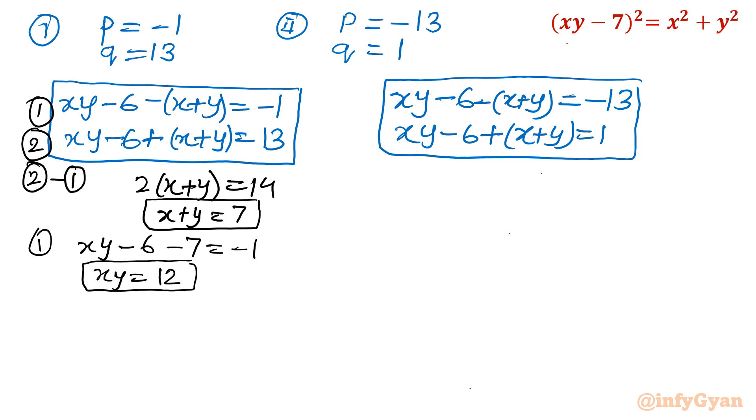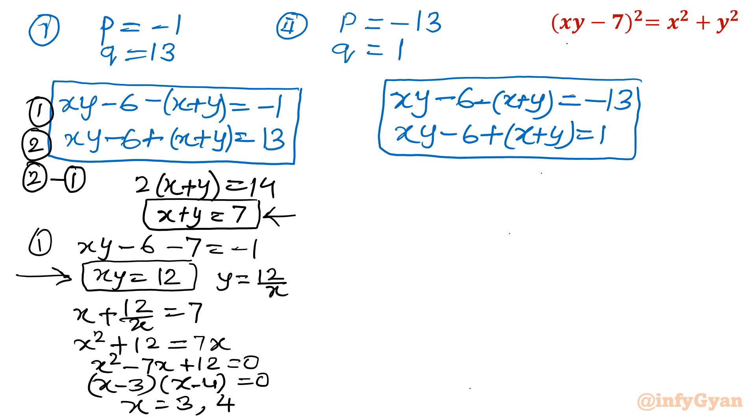Now x plus y is 7, xy is equal to 12. I will write y as 12 over x and put it there. So x plus 12 over x equal to 7. Multiply both sides by x: x square plus 12 equal to 7x. x square minus 7x plus 12 equal to 0. I can see x minus 3, x minus 4. There will be 2 factors. So I can write x is equal to 3 or 4.